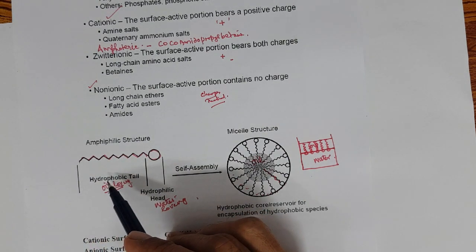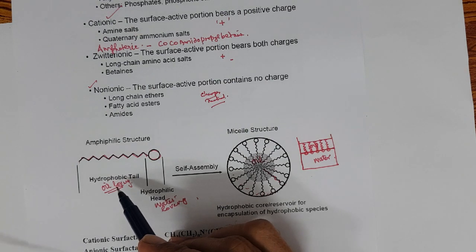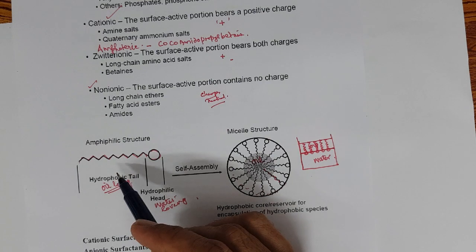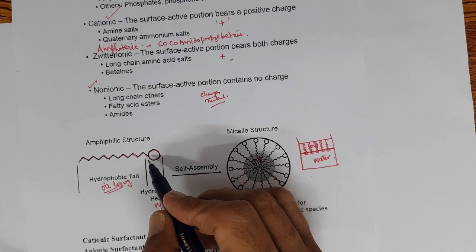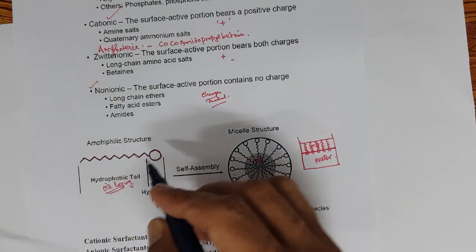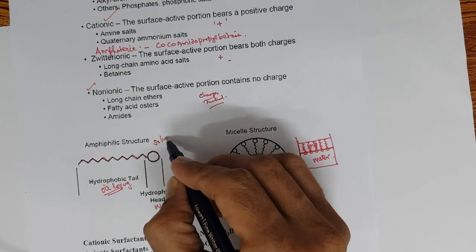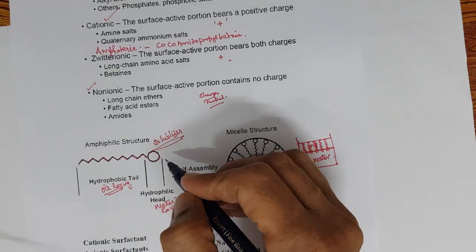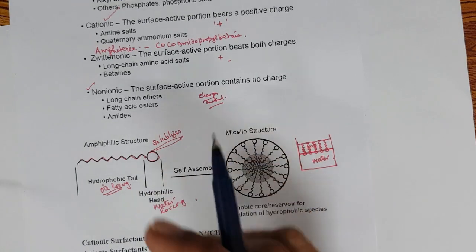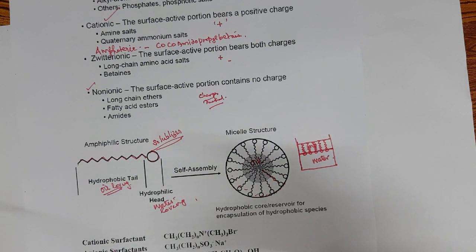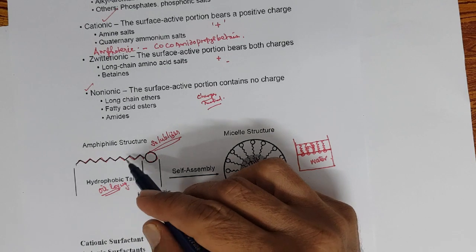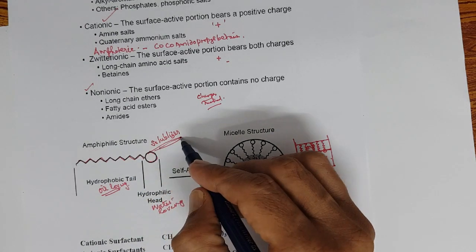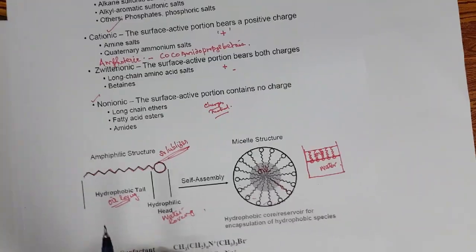The long chain fatty acids — stearic, palmitic, oleic, linoleic — that is the long chain, which is the polar group. This kind of structure can also act as a solubilizer. It makes an insoluble ingredient soluble. If something is not soluble in water, it will form a micro-emulsion and make it soluble in water, forming a clear system. What is the difference between this as a solubilizer and a hydrotrope?